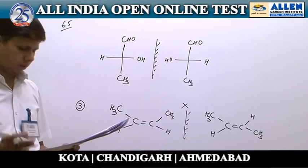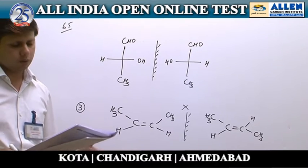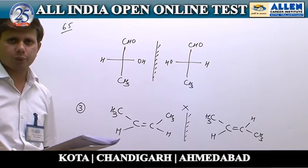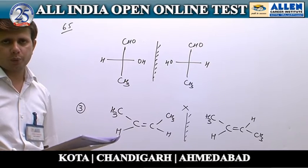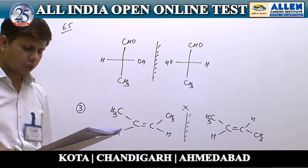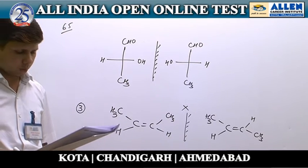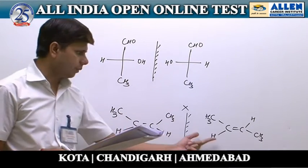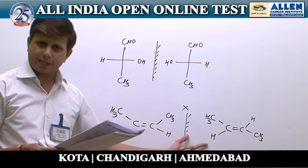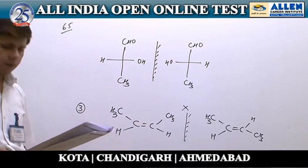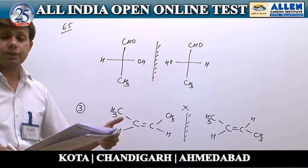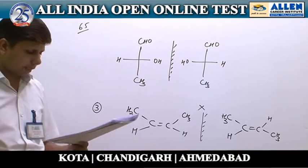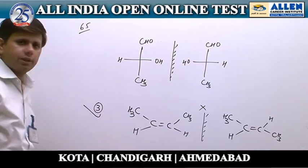In option four, the two compounds have different structural formulas, so they cannot be stereoisomers — they are structural isomers. In option three, the given compounds are stereoisomers and are not mirror images, so it is a pair of diastereomers. The correct answer is the third option.